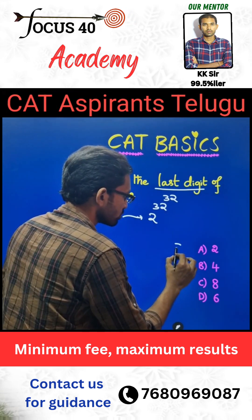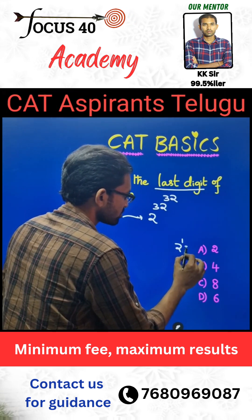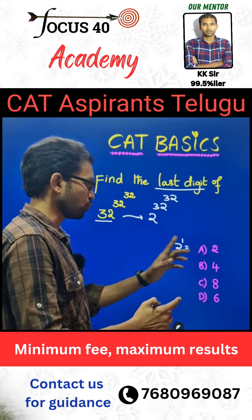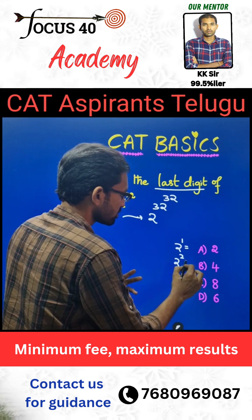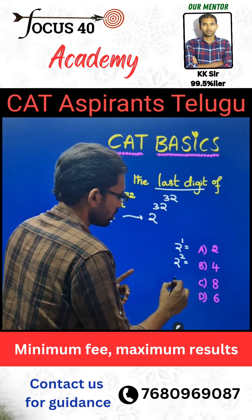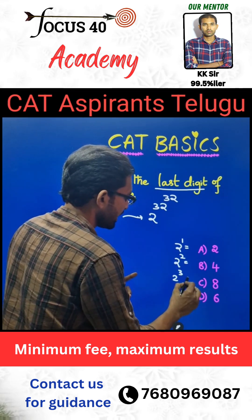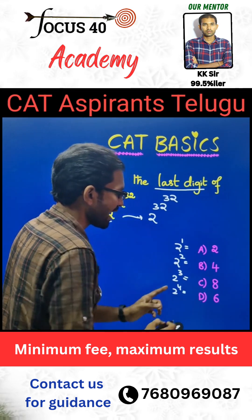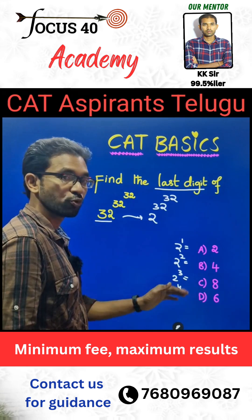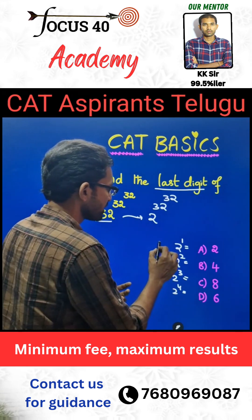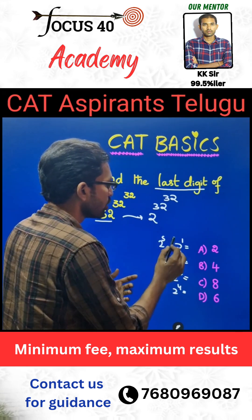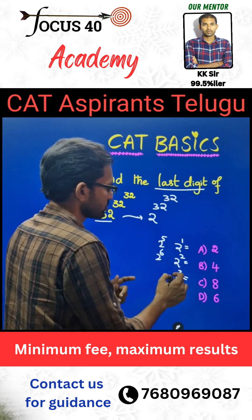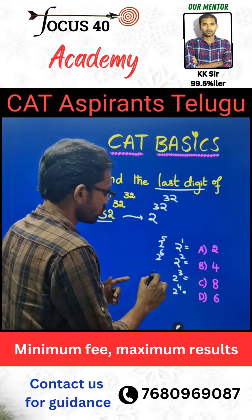We have the same two powers. 2 power 1 is 2 — the last digit is 2. 2 squared is 4. 2 cubed is 8. 2 power 4 is 16, and the last digit is 6. So the cycle is: 2, 4, 8, 6. 2 power 5 is the same cycle — 2 power 5 is 32, and the last digit is 2.